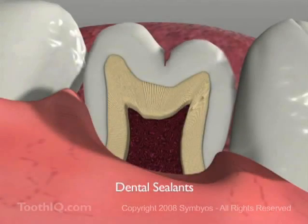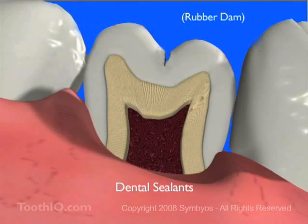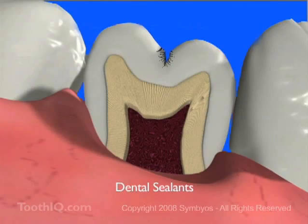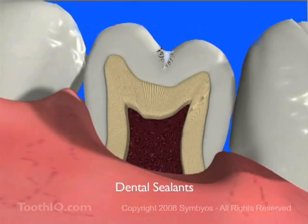Following thorough plaque removal from the pits and fissures, the tooth is isolated from all mouth moisture and the grooves are etched with a mild acid solution. This produces a microscopically roughened surface into which the sealants will adhere. The sealant is then applied to the grooves as a viscous liquid, which hardens on its own or by exposure to a blue light. Once placed, the sealant prevents bulk plaque from being able to accumulate in the pits and fissures.